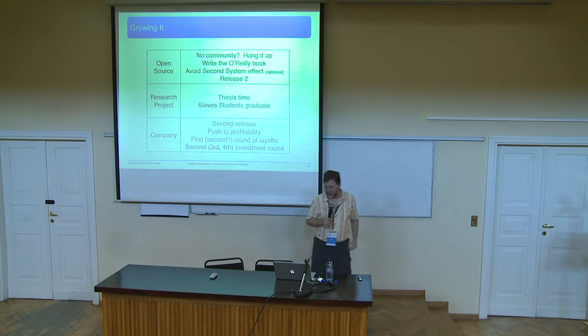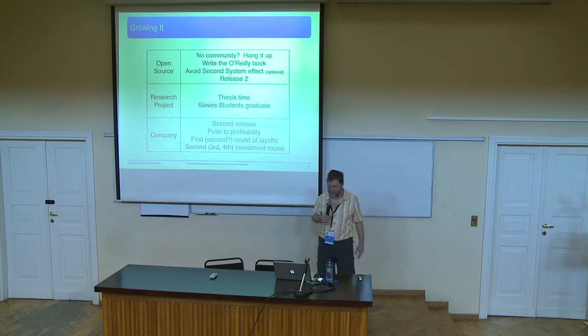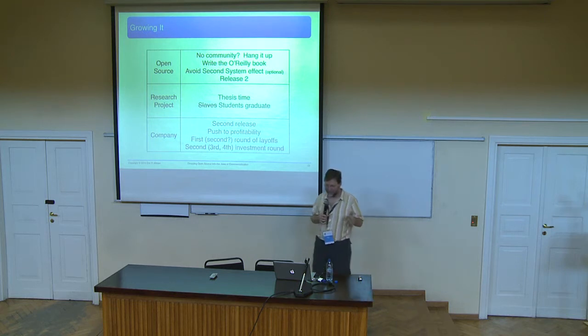And so you ultimately do release 2 or 3 or whatever you need to be doing the growth. With research project, by the way, these are on different time scales. So open source can be anything from, you know, 3 months to 3 years. You know, companies, similar spread. Research projects tend to be about 4 or 5 years. They tend to be about the length of one grad student period. So it's fairly artificial.